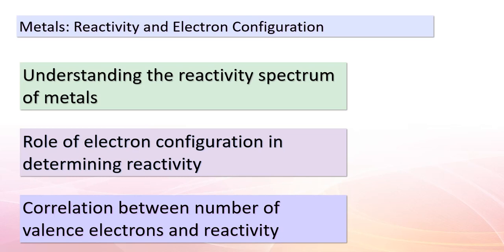Now, it's time to explore metals and their captivating reactivity. Metals have a wide range of behaviors when it comes to reacting with other substances. We'll uncover how their electron configuration — particularly the arrangement of valence electrons — influences this behavior. Keep your eyes on the correlation between the number of valence electrons and how willing metals are to join the chemical dance.